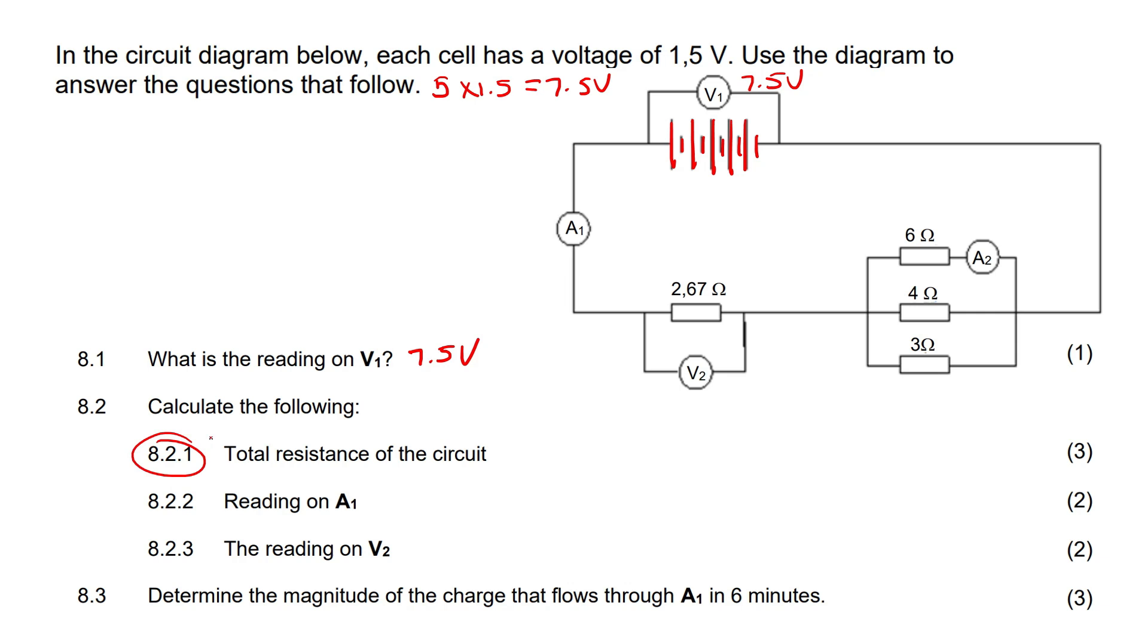This first question says calculate the following: the total resistance of the circuit. Well, that's easy. You've got to look at all the parallel parts and all the parts in series. So here we have a parallel part. Let's add that all together using the parallel formula.